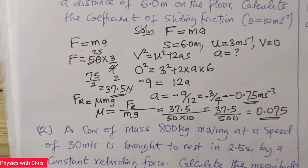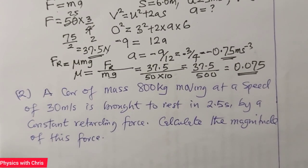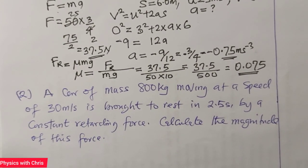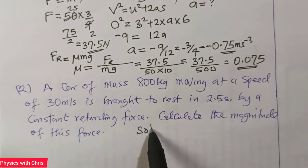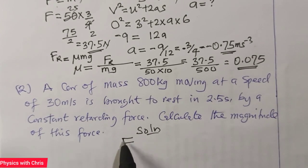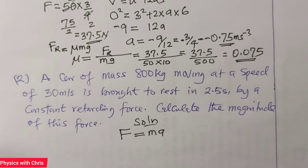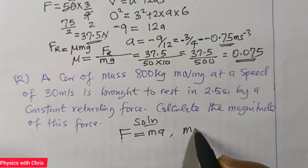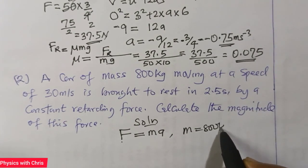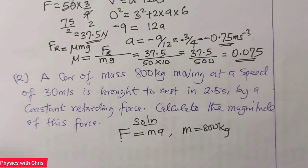Let's look at the second question. A car of mass 800 kg moving at a speed of 30 m/s is brought to rest in 2.5 seconds by a constant retarding force. That retarding force F is also given as mass times deceleration or retardation. Calculate the magnitude of this force F. My mass is given as 800 kg, and I need to find the deceleration using one of the equations of motion.